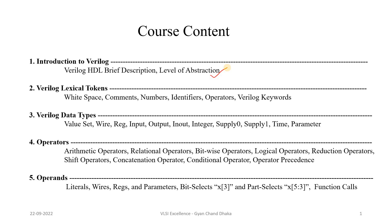In the next module of this course we will be covering about Verilog operators, where we will cover different types like arithmetic operators, bitwise operators, conditional operators, concatenation operators, and reduction operators. Following that, we will cover operands — the entities on which a particular operation is performed — including literals such as strings and numbers, wires, register data, parameters, bit select, part select, and functions.